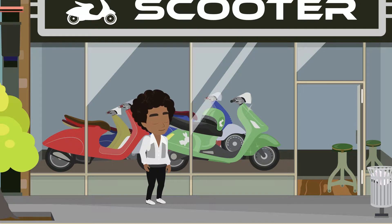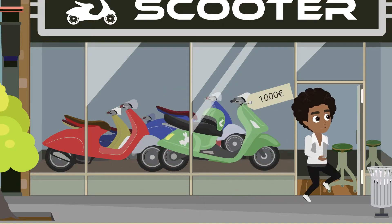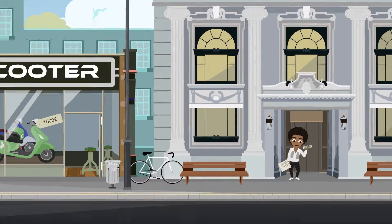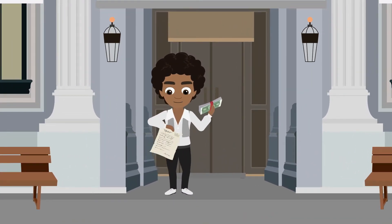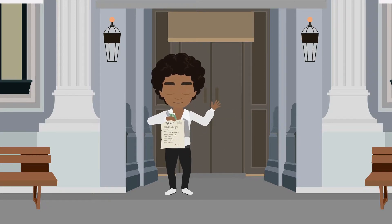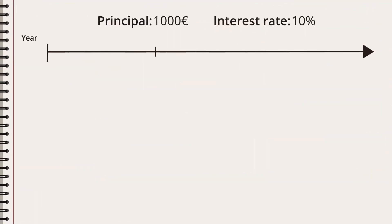Michael wants to buy a new moped — it costs quite a lot of money. Check with the bank, Michael. They might lend you the money. That was fast! What did they say? Ten percent interest. Okay, and for how long do you plan to borrow the money? Five years. Let's help Michael calculate this.